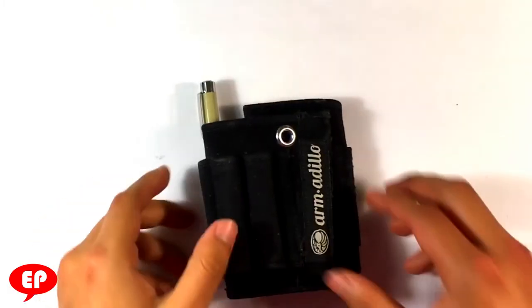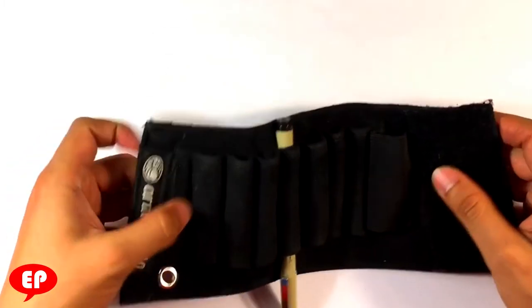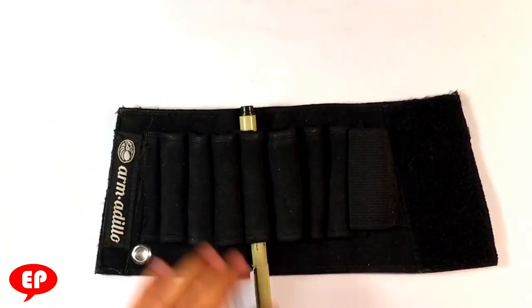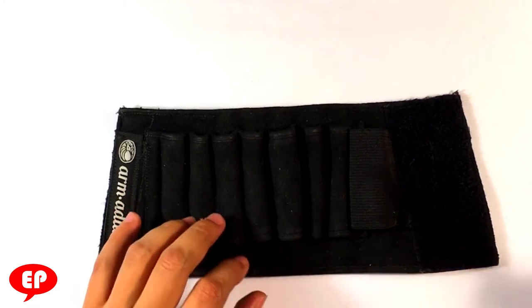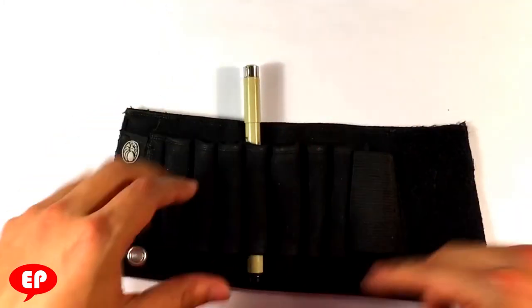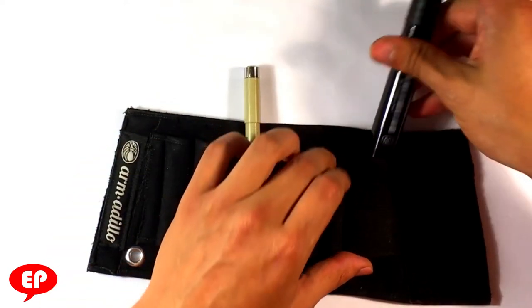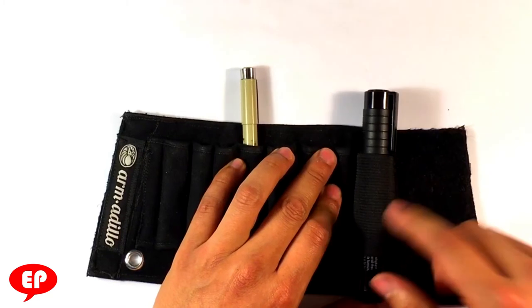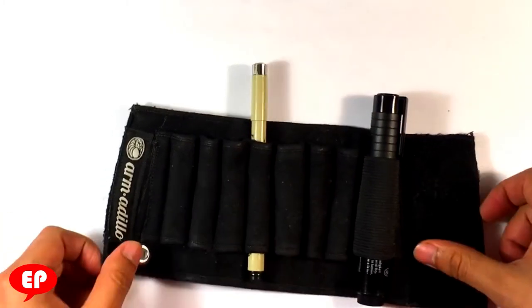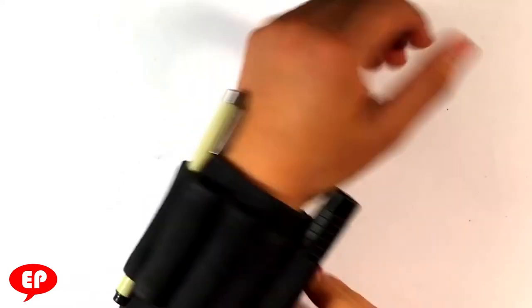This is the Armadillo pencil case from our sponsor. It's a pencil case where you can put your pencils in right here. There are different loops - slightly larger ones and even a bigger loop for a huge marker. You can put this on your wrist with velcro and wear it if you need to.